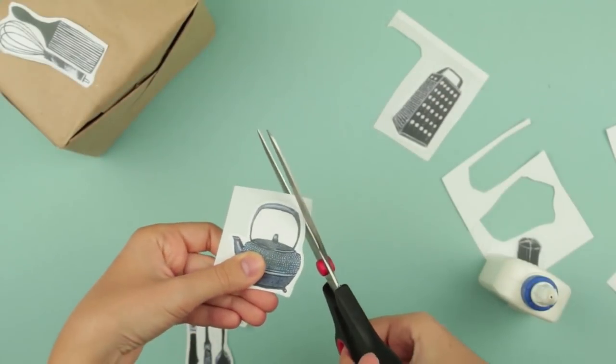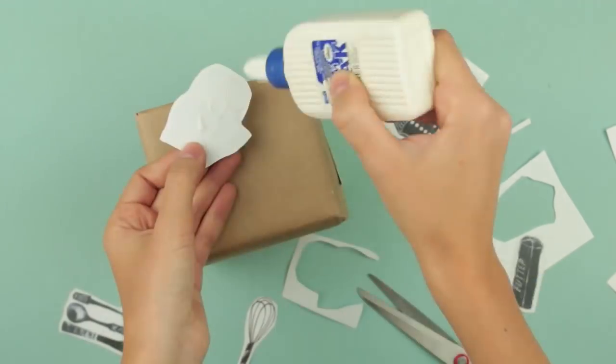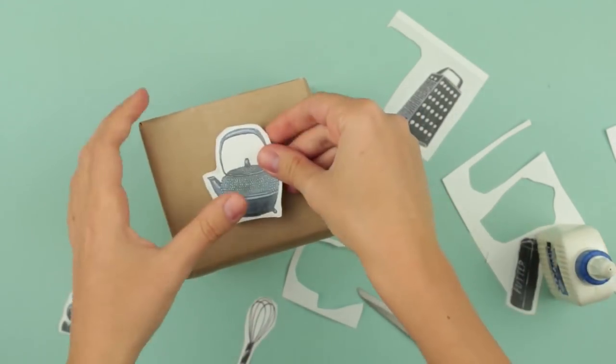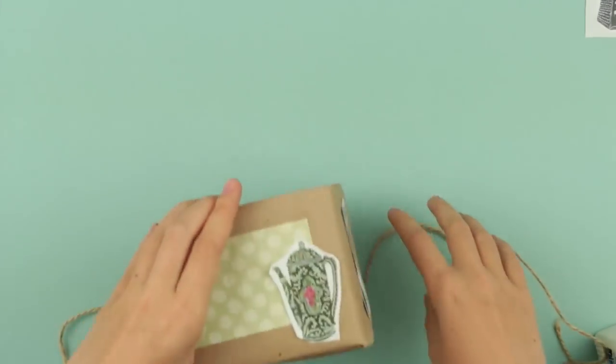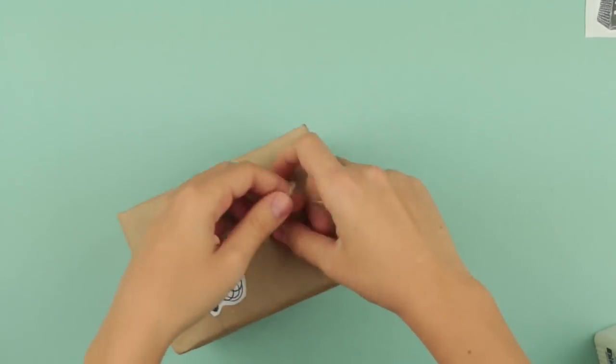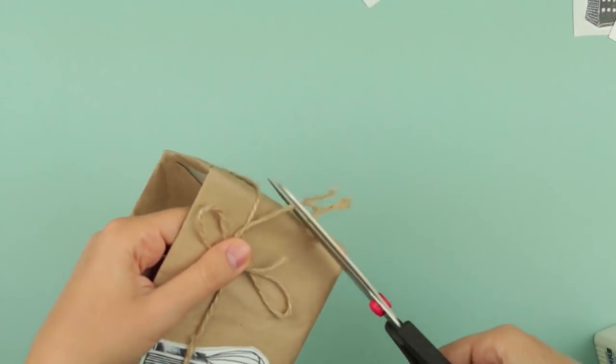Cut out a couple more pictures and glue them to the box. Take a small piece of twine. Wind the box. Tie a bow and cut off the excess.